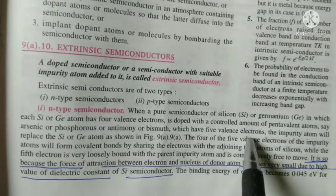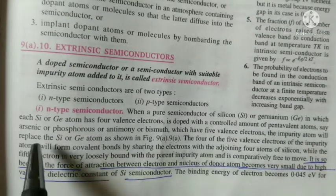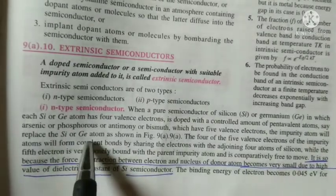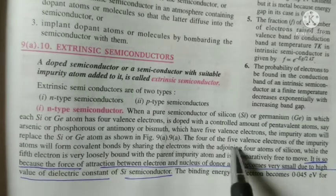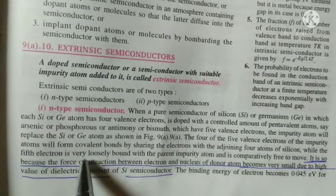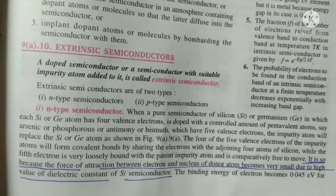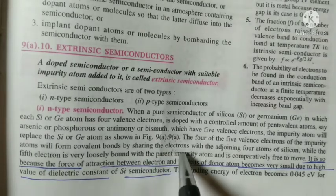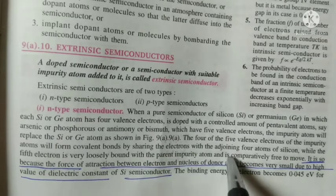...the impurity atom replaces the silicon or germanium atom, and four of the five valence electrons of impurity atom will form the covalent bond by sharing the electrons with the adjoining four atoms of the silicon...